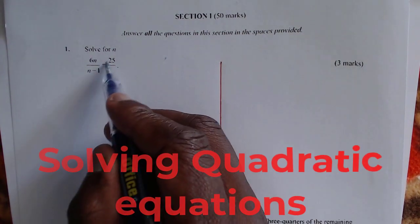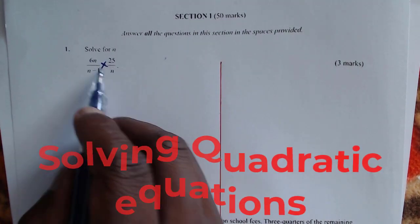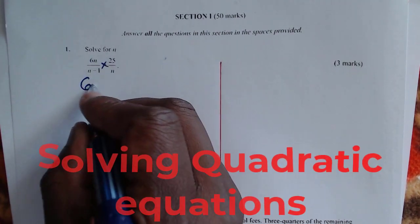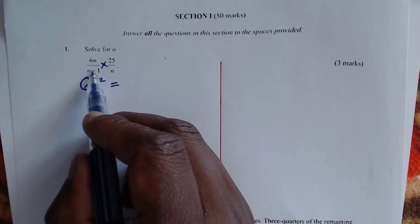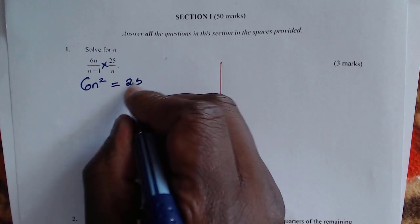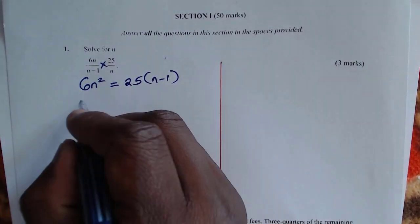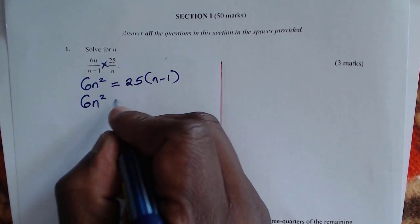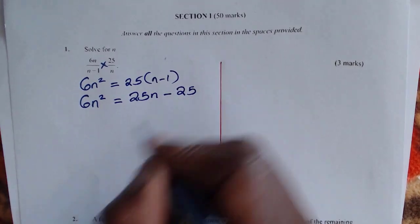The first thing you're going to do is to cross multiply. So we're going to do it like this: 6n times n, which will give 6n squared, is equals to 25 multiplied by n minus 1. Let's open the brackets. So you get 6n squared is equals to 25n minus 25.